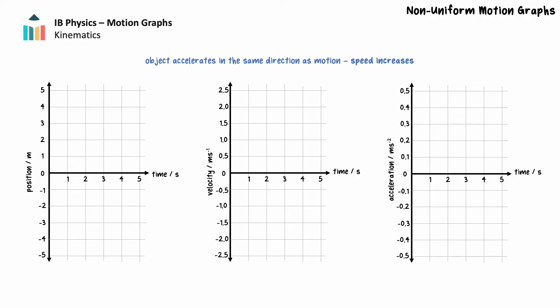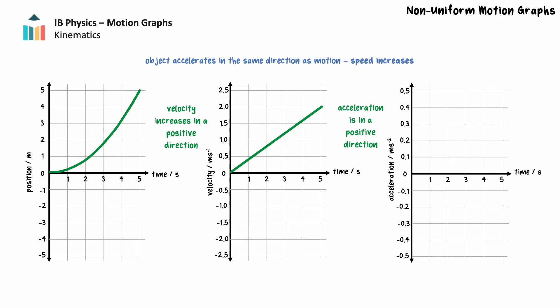In our previous example, we examined an object moving and accelerating in a positive direction. The position time graph for this type of motion shows an object's position increasing in a positive direction over time. The graph is curved upward, increasing with steepness over time, since the object's velocity increases over time. Assuming the acceleration is uniform, the velocity time graph will show a straight line above the time axis with a positive gradient, which represents the acceleration. Since the acceleration is constant and positive, the acceleration time graph will have a gradient of 0 and will be located above the time axis.